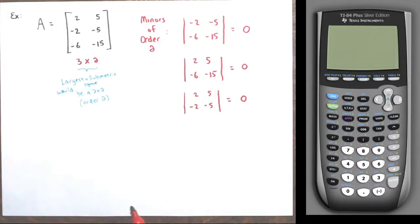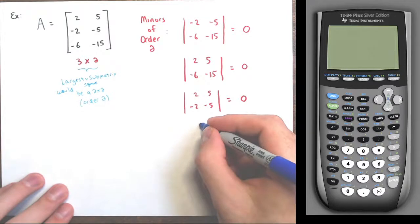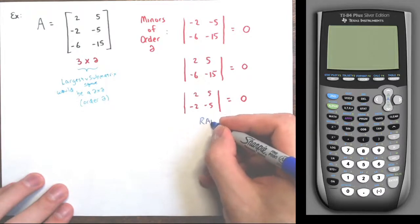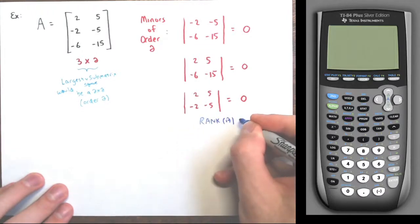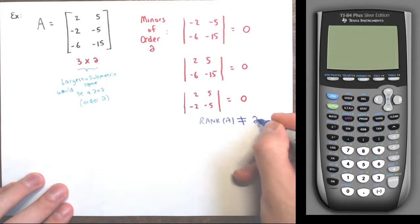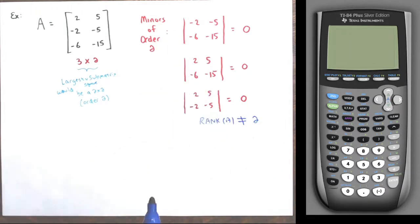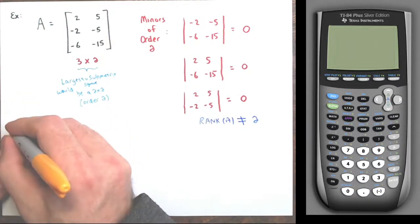This tells me the rank of this matrix is not two, because I couldn't find a minor of order two that was non-zero. So let's decrease the order — all the two by two minors are zero, now we're going to make minors of order one.